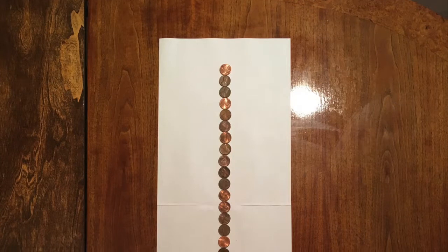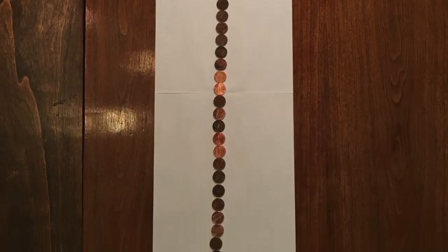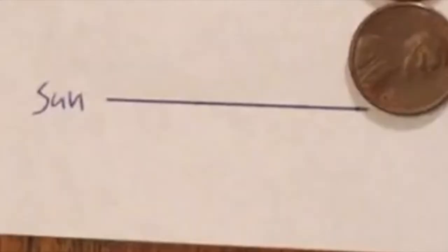They will use taped sheets of white paper and use pennies to represent one astronomical unit. They should first draw a vertical line at the edge of the paper and label this sun.